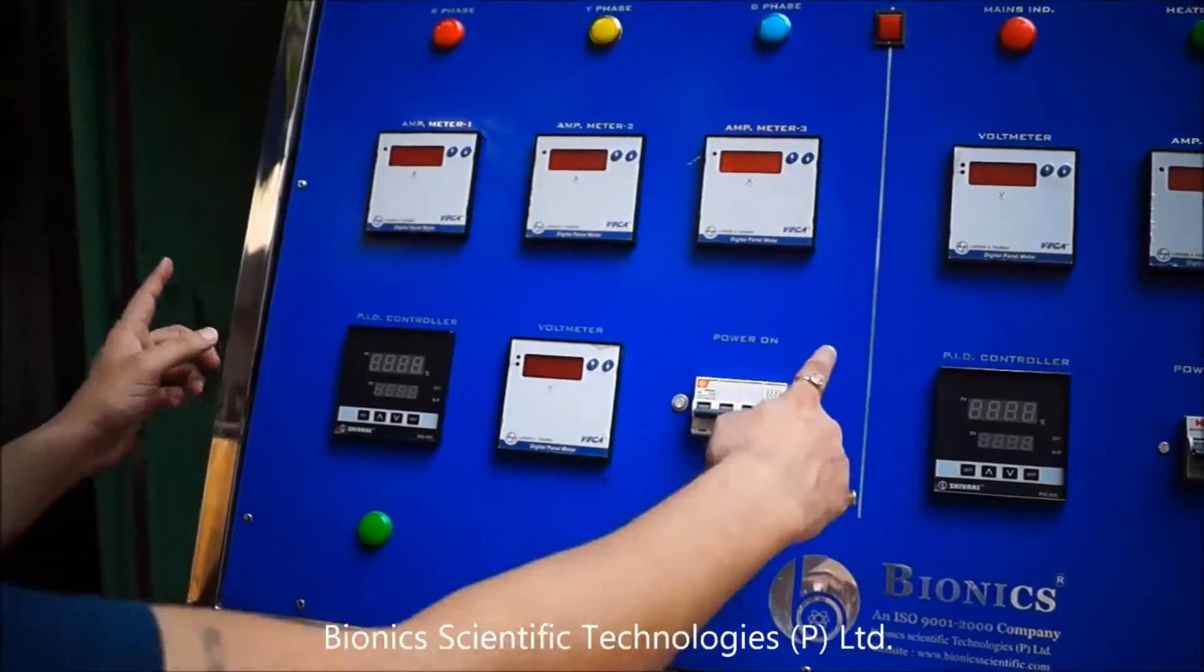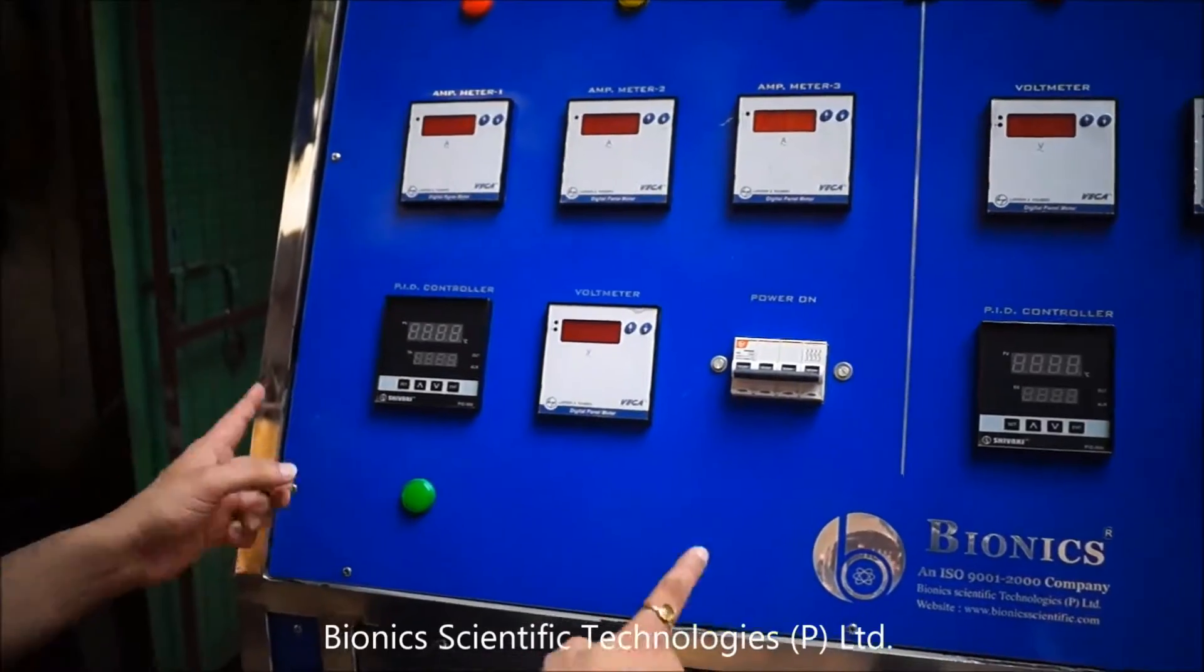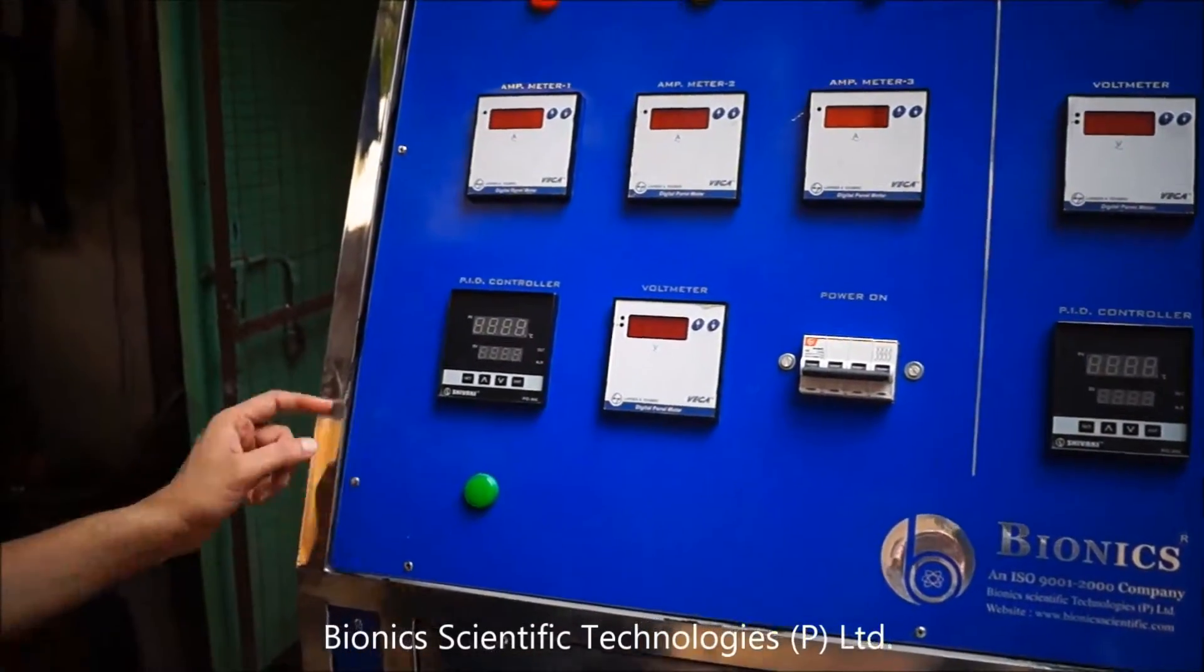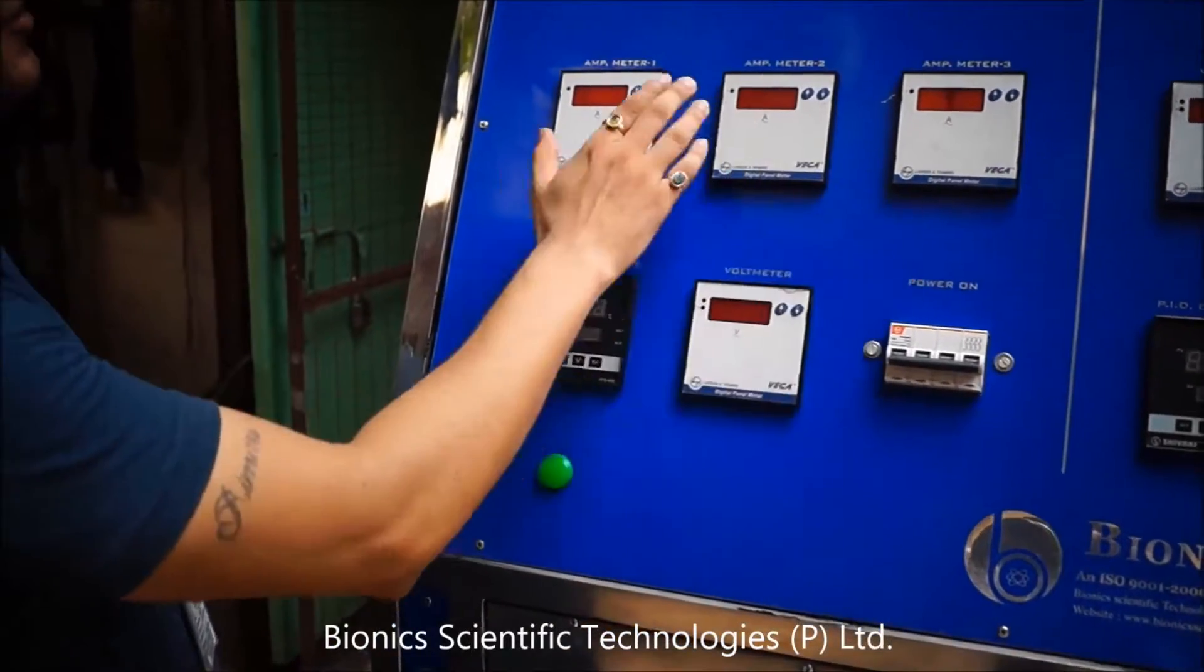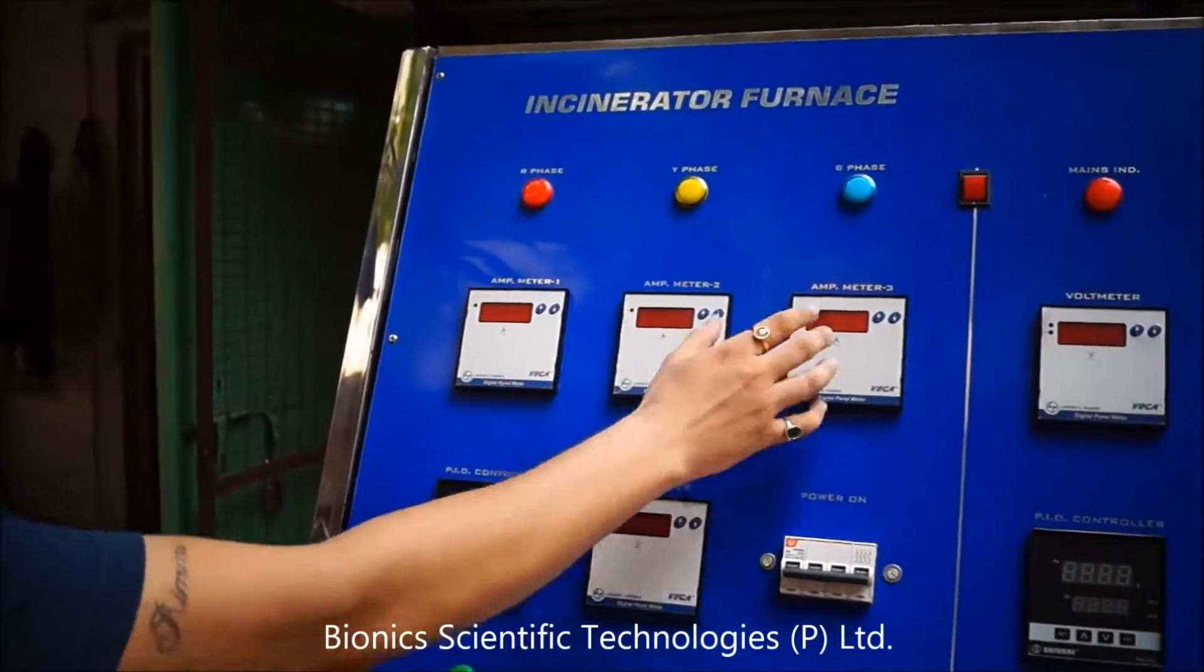The primary chamber runs on three phase electricity. These are three ampere meters for all three phases. First phase, second phase, third phase.